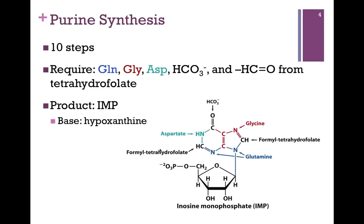The process requires 10 steps. We're not going to look at those steps in detail, but it requires certain amino acids that you do need to know: glutamine, glycine, and aspartate. We also need bicarbonate, and we need formyl groups carried by the important cofactor tetrahydrofolate. The product is inosine monophosphate, IMP, a starting intermediate from which we'll form both AMP and GMP. The base is hypoxanthine. Two nitrogens are contributed by two glutamine residues; glycine contributes a nitrogen and two carbons; aspartate contributes an amine group; the carbonyl comes from bicarbonate; and two CH groups come from the formyl groups donated by tetrahydrofolate.